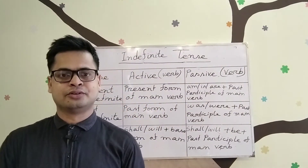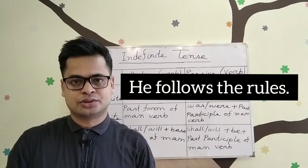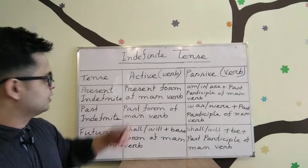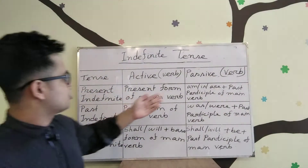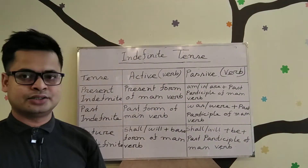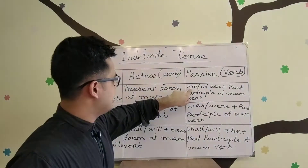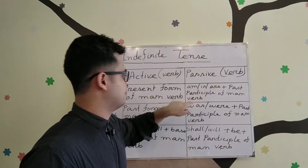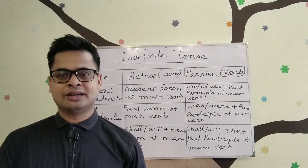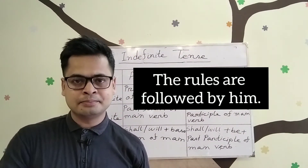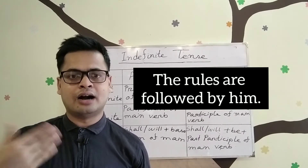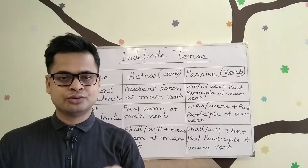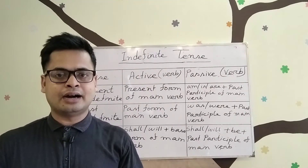For example: 'He follows the rules.' 'Follows' is an example of the present form of the main verb. In passive voice, we use 'is/are' plus the past participle of the main verb. So the passive form is: 'The rules are followed by him.' Here, 'are followed' is the verb form used when making a passive sentence.